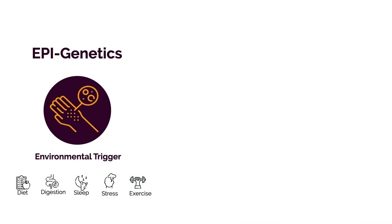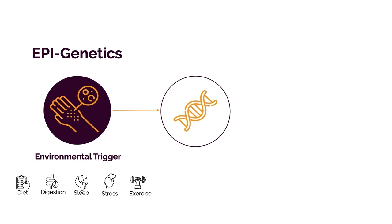Remember I alluded to these in the beginning. These environmental triggers are collectively referred to as epigenetics. The prefix 'epi' denotes a higher position because epigenetics control genetics. In reality, it's epigenetics, not genetics, that really matters — because these are all things within our control that can directly impact how much inflammation we have in our body.